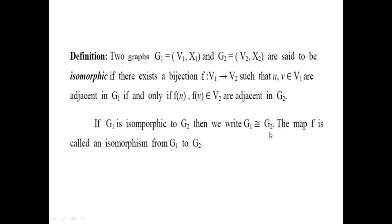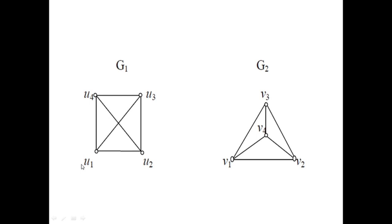Let's see an example. Two graphs G1 and G2. G1 consists of four vertices namely u1, u2, u3, u4. The same way G2 consists of four vertices v1, v2, v3 and v4. You can see the number of edges in G1: 1, 2, 3, 4, 5, 6. Same for G2: 1, 2, 3, 4, 5, 6. So same number of points and same number of lines or edges.